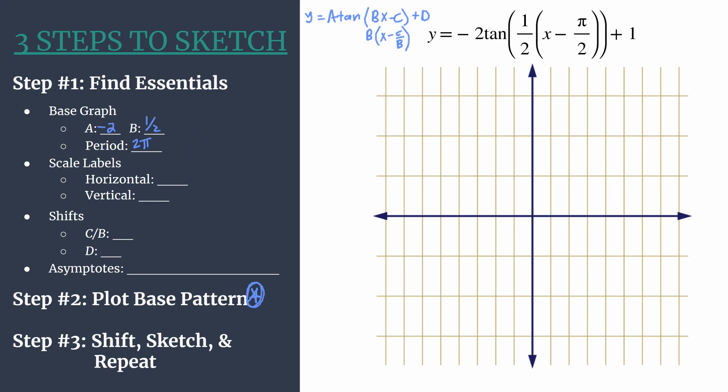So now that we have the period, we can go ahead and choose how to label our axes. With the three steps to sketch method, I like to be really particular for the horizontal scale. Take the period and divide it by 4. That will ensure that your base pattern in the next step will align nicely with your horizontal tick marks. So we have 2 pi divided by 4. That ends up reducing to pi over 2. So that's how we'll label our horizontal tick marks.